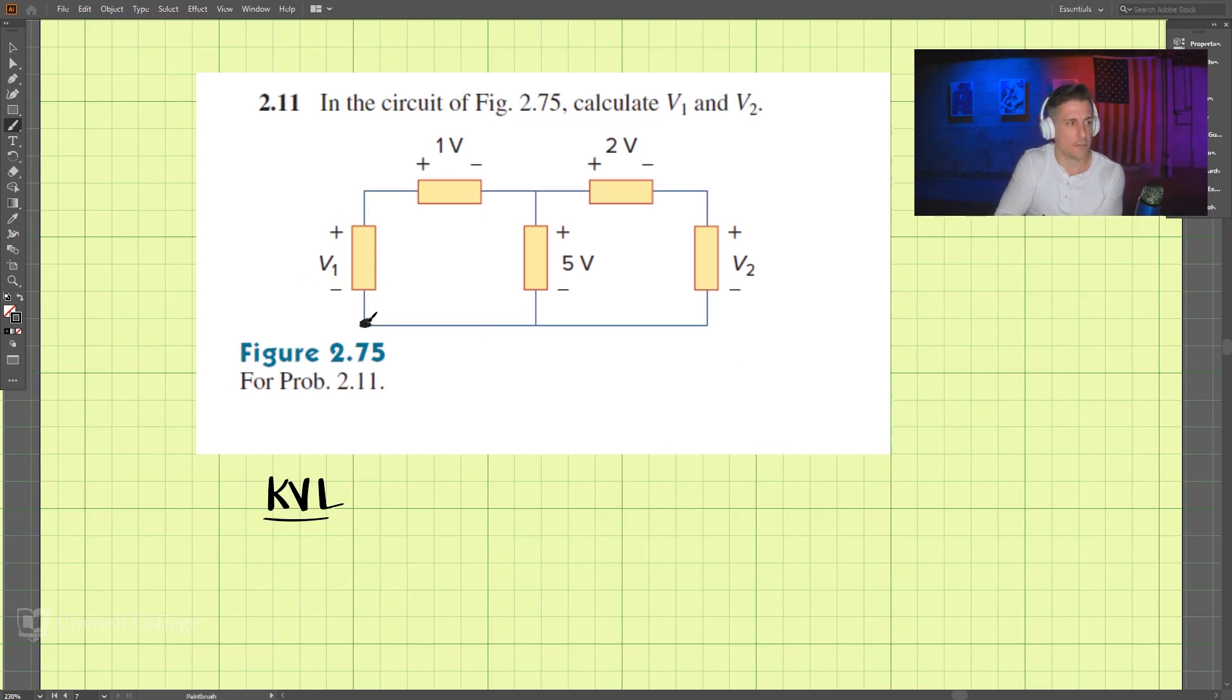I'm going to start here, and this is going to be positive v1, and then negative 1 volt because it goes plus to minus. So v1 minus 1, and then minus 5.